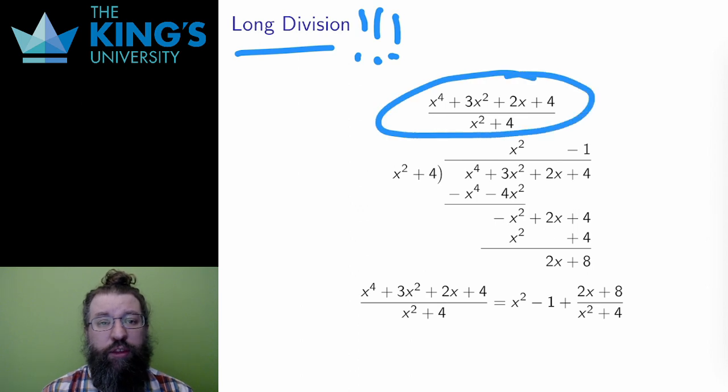I want to understand the rational function x to the 4 plus 3x squared plus 2x plus 4 over x squared plus 4. This is not a proper rational function. The degree of the numerator is higher. I want to use division to make it a proper rational function. So, I set up the long division. You can see that the numerator and the denominator are here in the notation.